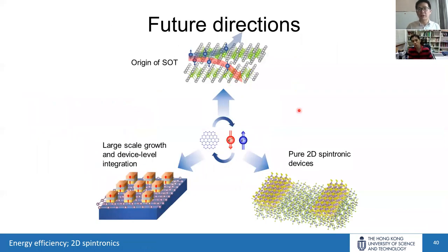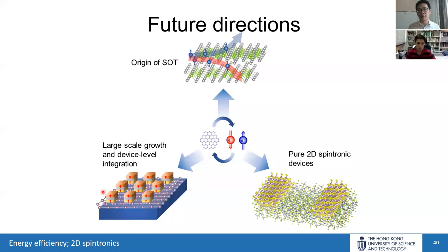There are many important directions for future work. First, we still need to better understand the origin of SOT in these materials. Second, we need large-scale growth of 2D materials for MRAM applications — growing materials at high scale with excellent crystallinity, then depositing perpendicular magnets on top and integrating into MRAM device arrays. Third, we can work on purely 2D spintronic systems, combining 2D magnets and 2D nonmagnets to explore exotic topological phase properties and novel spintronic devices.